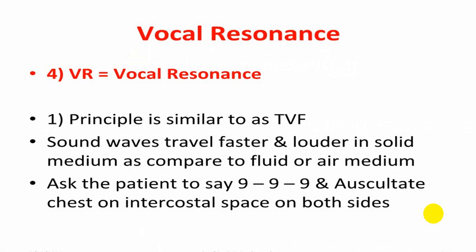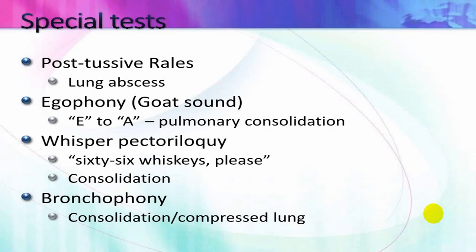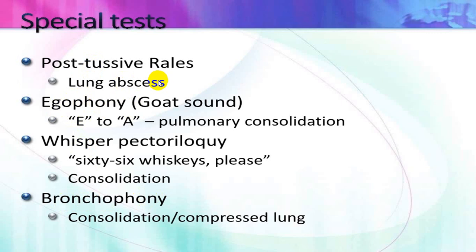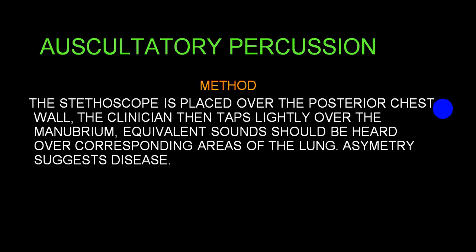Vocal resonance recap: increased vocal resonance in the three main conditions. In thin-walled, superficial, large empty cavity, you get typical egophony on whispering pectoriloquy. In consolidation and mass in contact with a patent bronchus, whispering pectoriloquy gives loud bronchial sound called bronchophony. In lung abscess and bronchiectasis, you get post-tussive suction crackles — this is very characteristic.